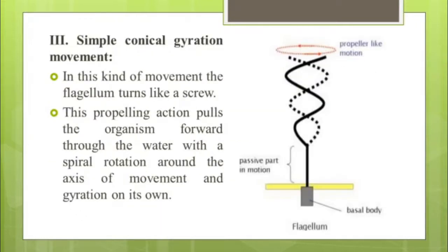The third type of flagellar movement is simple conical gyration, in which the flagellum turns like a screw. This propelling action pulls the organism forward through the water with a spiral rotation around the axis of movement and gyration on its own.